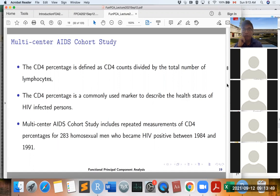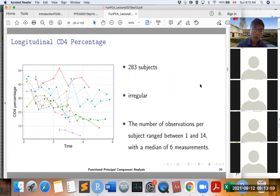The CD4 percentage is a commonly used marker to describe the health status of HIV-infected persons. This graph shows the longitudinal CD4 percentage. We have all 283 subjects, and you can see the observations are irregular, and the number of observations per subject range between 1 and 14, with a median of 6 measurements. Very sparse data.